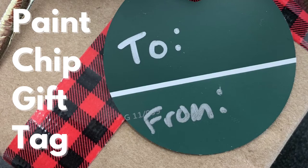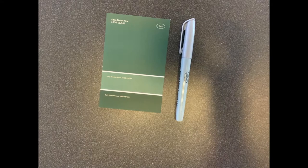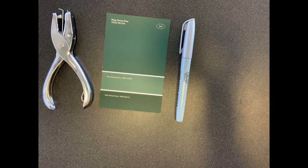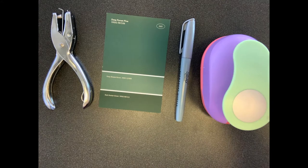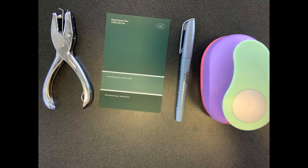Paint chip gift tags are super easy to make. You will need a paint chip, a pen or marker, a single hole punch, and a large circle hole punch or scissors.